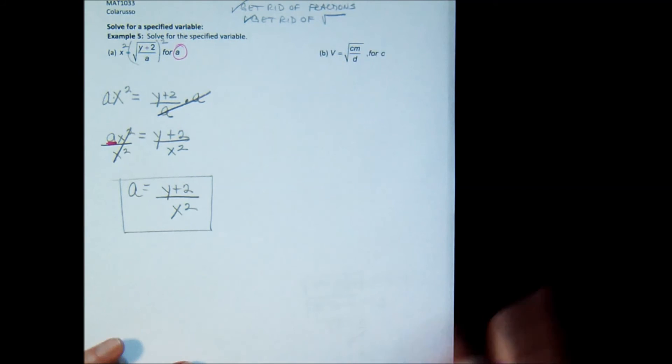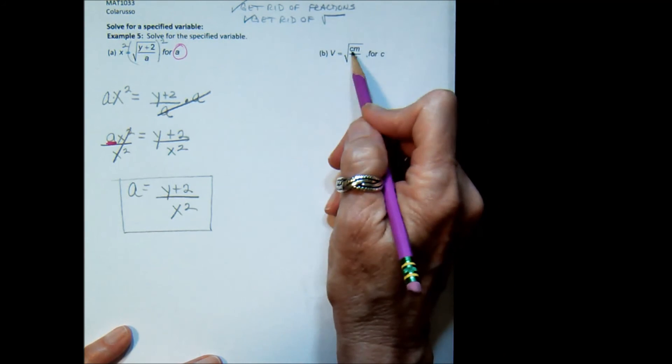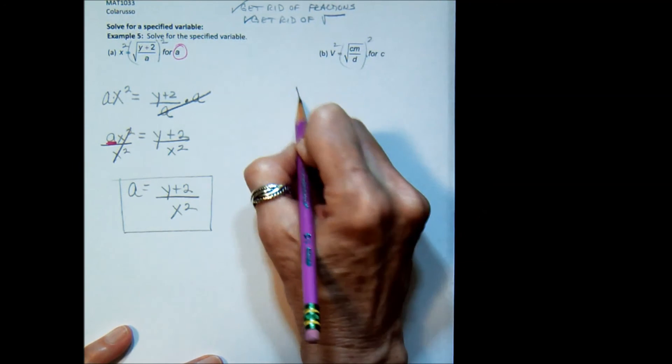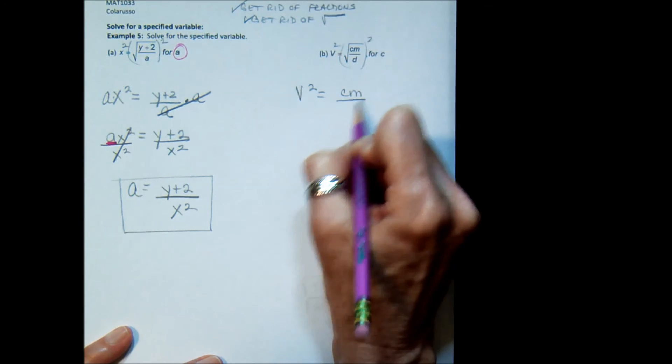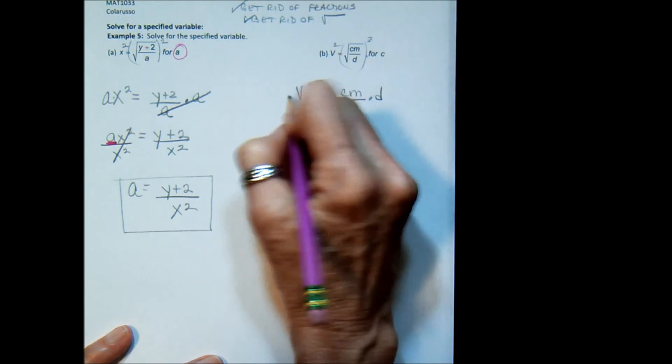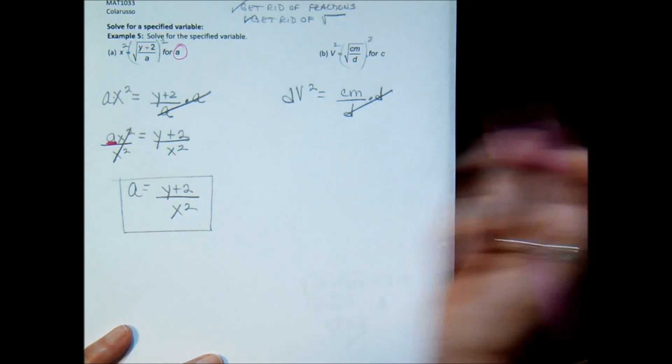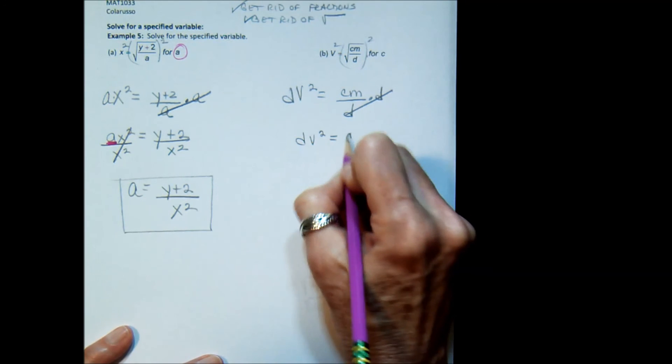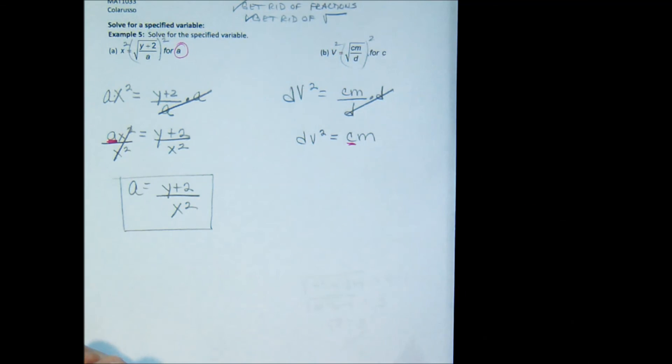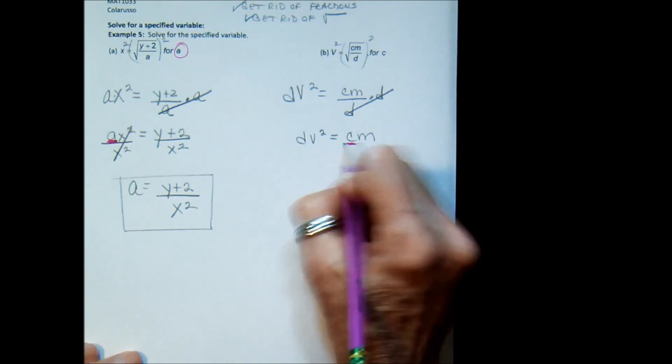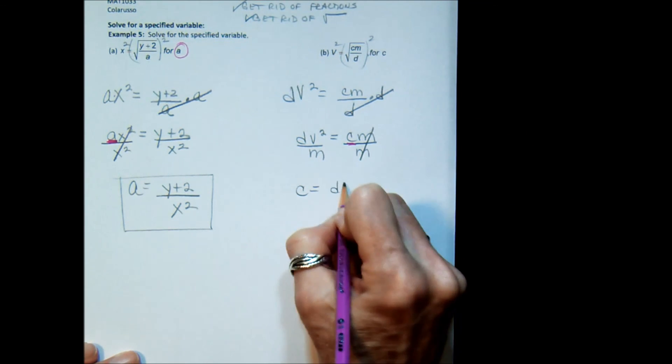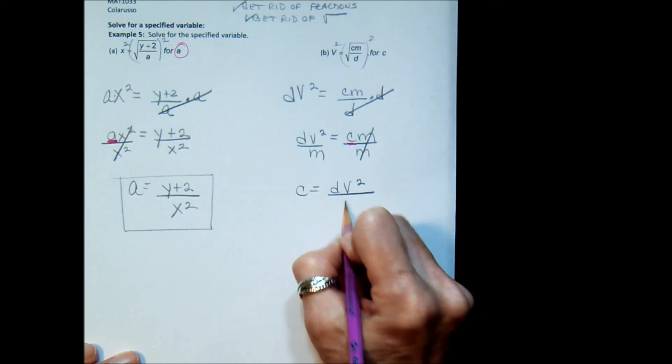Let's try another one. I'm looking for c. Here it is under the radical. We're going to first get rid of the radical by squaring. v squared equals cm over d. Now we're going to get rid of the fraction by multiplying by the denominator. And I get dv squared equals cm. Here is the letter that we are looking for. The c is the variable. So I'm going to divide by its coefficient, which is m. And I get c equals dv squared over m.